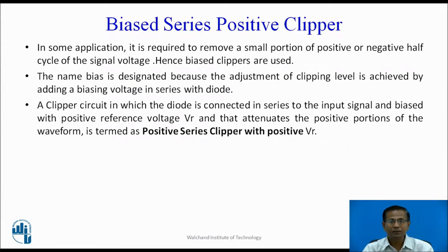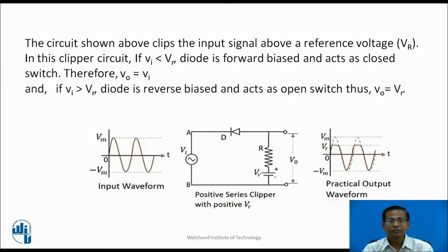Biased Series Positive Clipper: In some applications, it is required to remove a small portion of the positive or negative half cycle of the signal voltage; hence biased clippers are used. The name 'biased' is used because the adjustment of clipping level is achieved by adding a biasing voltage in series with the diode. A clipper circuit in which the diode is connected in series to the input signal and biased with a positive reference voltage Vr, which attenuates the positive portion of the waveform, is termed as the positive series clipper with positive Vr.